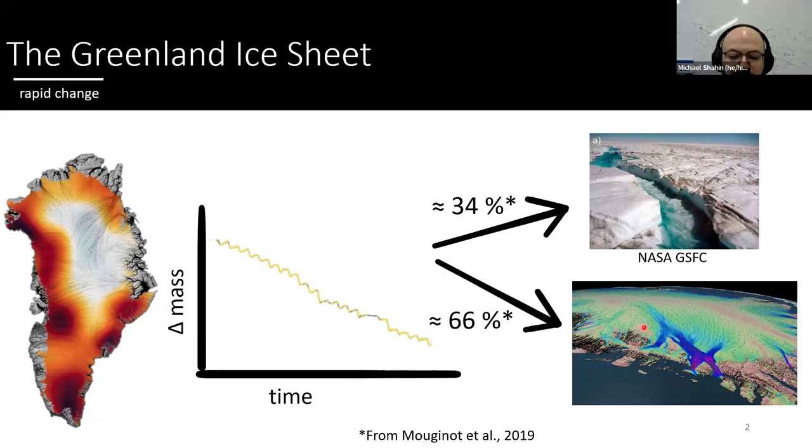But why do glaciers speed up like this figure here? And that's a central question to my research. There's currently a few competing hypotheses within the glaciology community. Namely, one, ocean driving change at the terminus, the terminus being where the glacier ends, and for marine terminating glaciers, ends into fjord waters. And two, surface runoff reaching the bed, which would lubricate the bed, increase sliding, therefore increase acceleration, thinning, and more mass loss.